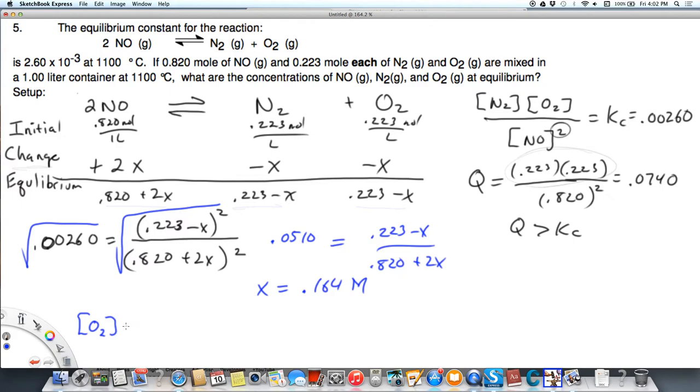So O2 at equilibrium is going to equal N2 at equilibrium. These are going to be equal, and that's going to equal 0.223 minus X or 0.223 minus 0.164. We cannot have a negative number. If we have a negative number, then we would have a big problem. So that comes out to be 0.058 molar, and it's very clear. You can see that it, in fact, went down.